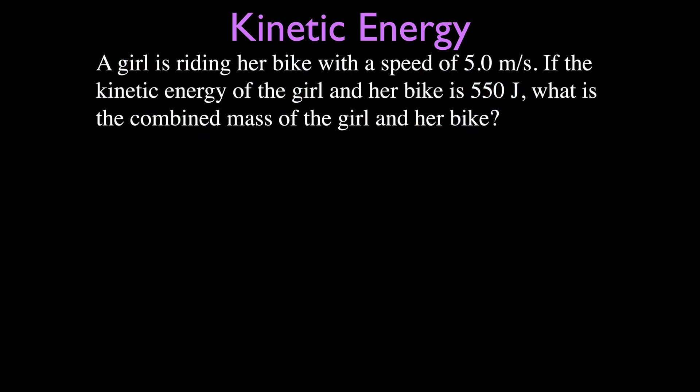Now, there's the next one. It's a girl. She's riding her bike and she has a speed of five meters per second. And her kinetic energy, her and her bike together, they have a kinetic energy of 550 joules and we want to know what is the mass of the girl and the bike together.